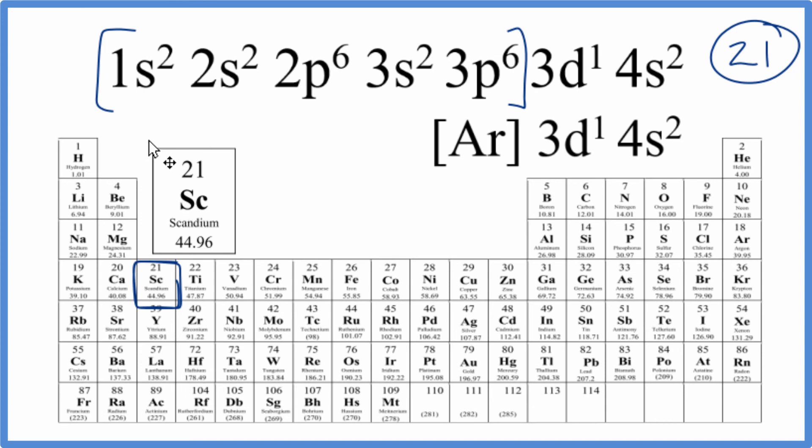So that's how you find which element is represented by 1s² 2s² 2p⁶ 3s² 3p⁶ 3d¹ 4s². This is Dr. B, and thanks for watching.